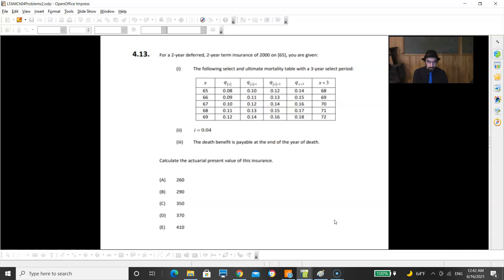For the next one, for a 2 year deferred, 2 year term insurance of 2,000 on 65 year old, you're given the following select and ultimate mortality table with a 3 year select period. You're given an interest value and you're given the death benefit is payable at the end of the year of death. Calculate the actuarial present value of this insurance. This fortunately is pretty straightforward.